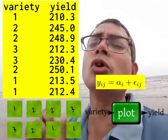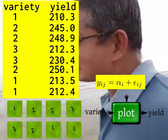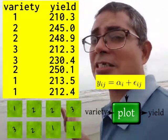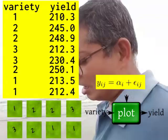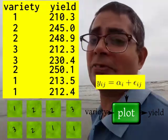People sometimes do not want to write it in this particular form, because in this case alpha 1 has the interpretation of what is the average yield you can expect from variety 1. But most of the time, we are interested in comparing the different varieties.